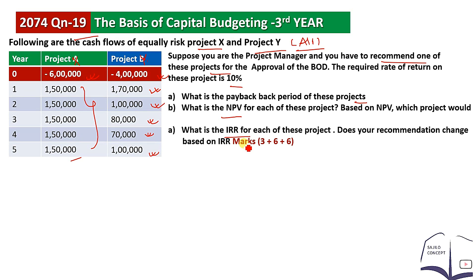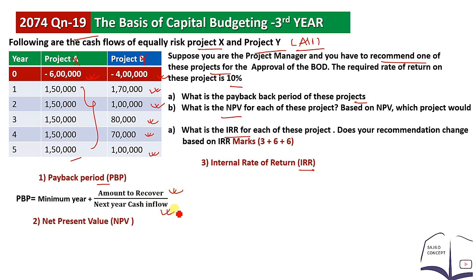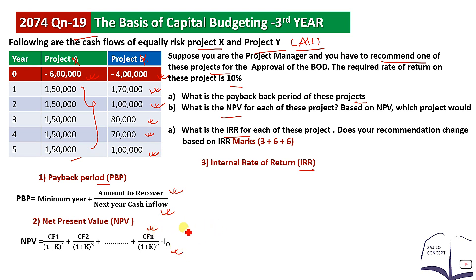So we need to find the payback period, net present value, and IRR. The payback period formula is: minimum year plus amount to be recovered, divided by next year's cash inflow. Net present value is: cash flow divided by (1 plus K) for year one, plus cash flow of second year divided by (1 plus K) squared, minus initial investment.